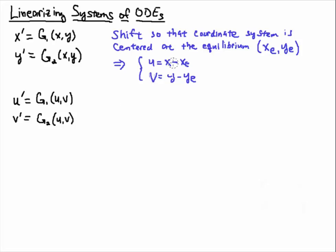When we shift our coordinate system to the equilibrium point, we will have an ODE in terms of these new variables. U prime equals g1 of u and v, and v prime equals g2 of u and v.